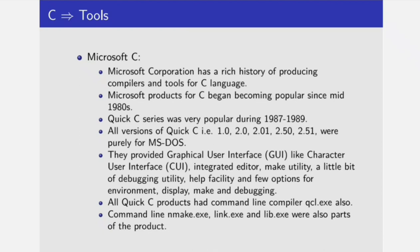Microsoft Corporation has a very rich history of producing compilers and tools for C language. Microsoft products for C started becoming popular since the mid 1980s. The Quick C series was very popular during 1987 and 1989. All versions of Quick C — 1.0, 2.0, 2.01, 2.50, 2.51 — were purely for MS-DOS.